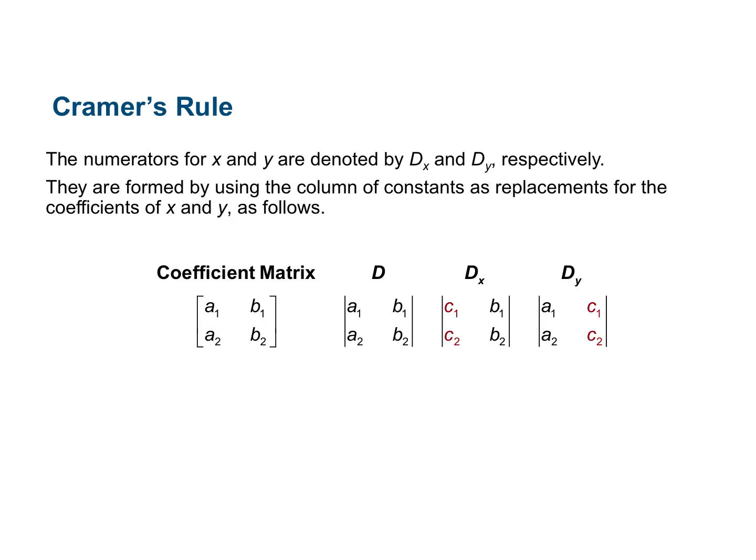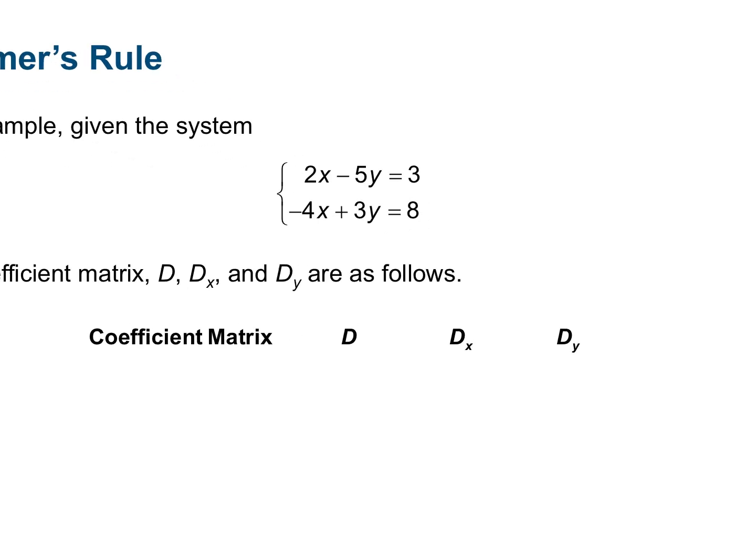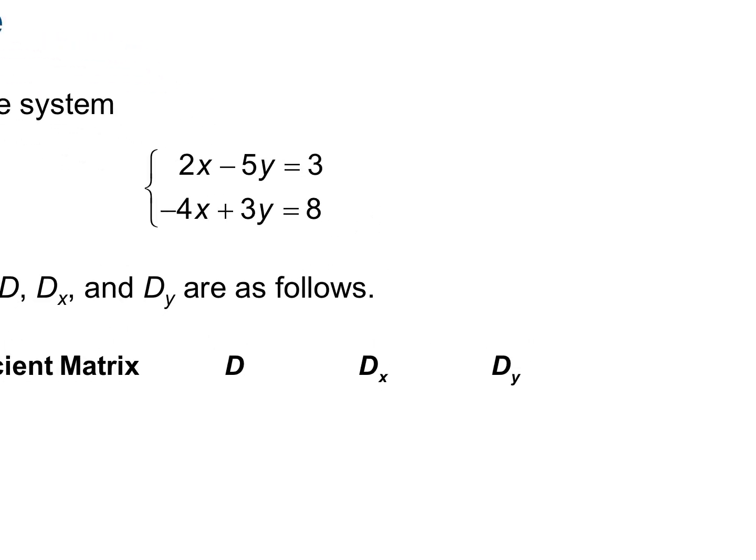We're going to skip this page and come back to it, but the next page explains a little bit better how we come up with the matrices. So here is a system of equations. We want to start by finding our matrices to then find the determinant of each of them.